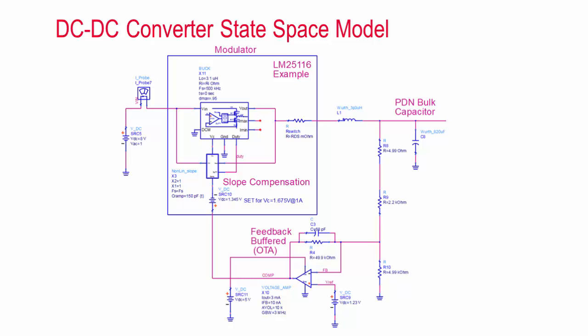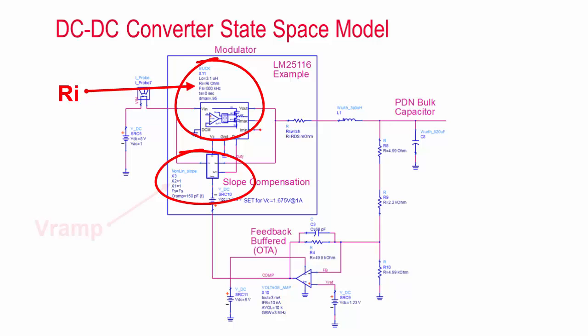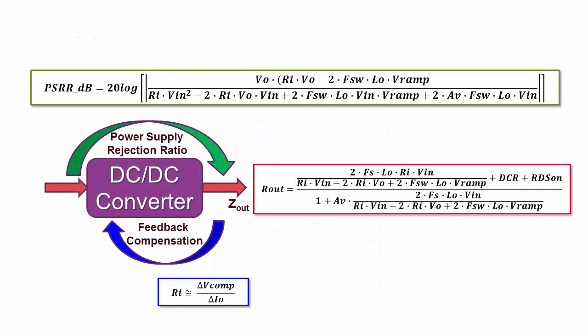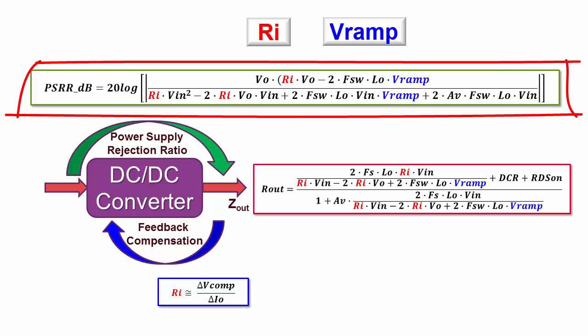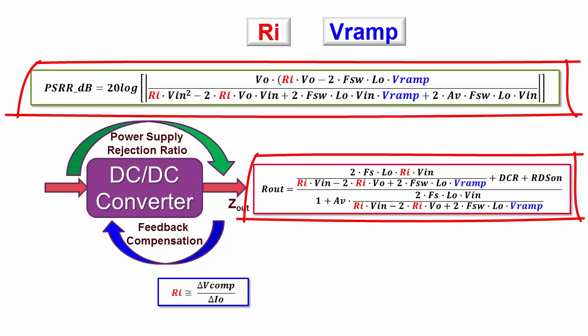Unfortunately, very few datasheets provide the value of the current sense resistor or the sawtooth ramp. And even when it is included, it's often incorrect, so it's best to measure it yourself. We can see that the performance of the converter is dominated by these two terms: the sawtooth ramp and the current sense resistance. In particular, you can see these two terms in the PSRR and the output impedance. In many cases the manufacturer doesn't specify these, and even when they do, they're often wrong, so it's better to make the measurements yourself.